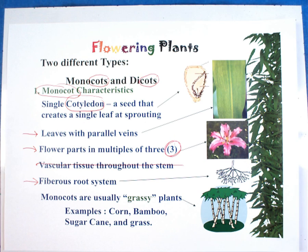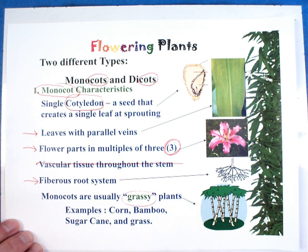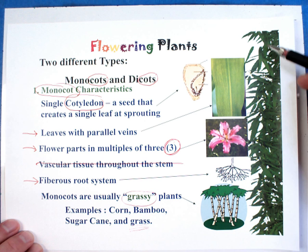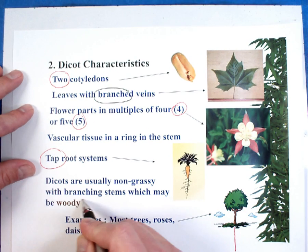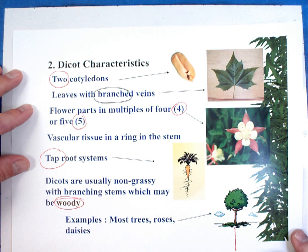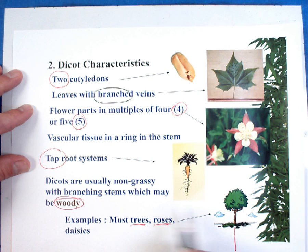Putting them into categories: your monocots are going to be your grassy plants — like the grass in your yard. Corn has those really long leaves, sugarcane, grasses in your yard — those would all be monocots. On the dicots, you will see that these are the ones that are more woody, like a tree — you would get wood from it. So most trees, roses — if you cut the stem of a rose, it doesn't get as big as a tree, but it has more of a woody type stem and the other properties that fall into these categories.